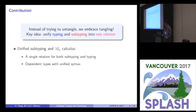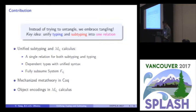We support dependent types with even unified syntax, the pure type system-like syntax. And this calculus can fully subsume system F sub. And we also mechanized our properties of metatheory in Coq. Most of them, we didn't do this for the subsumption of system F sub due to some technical difficulties. And we also show an example of object encodings in our calculus to show its expressiveness.